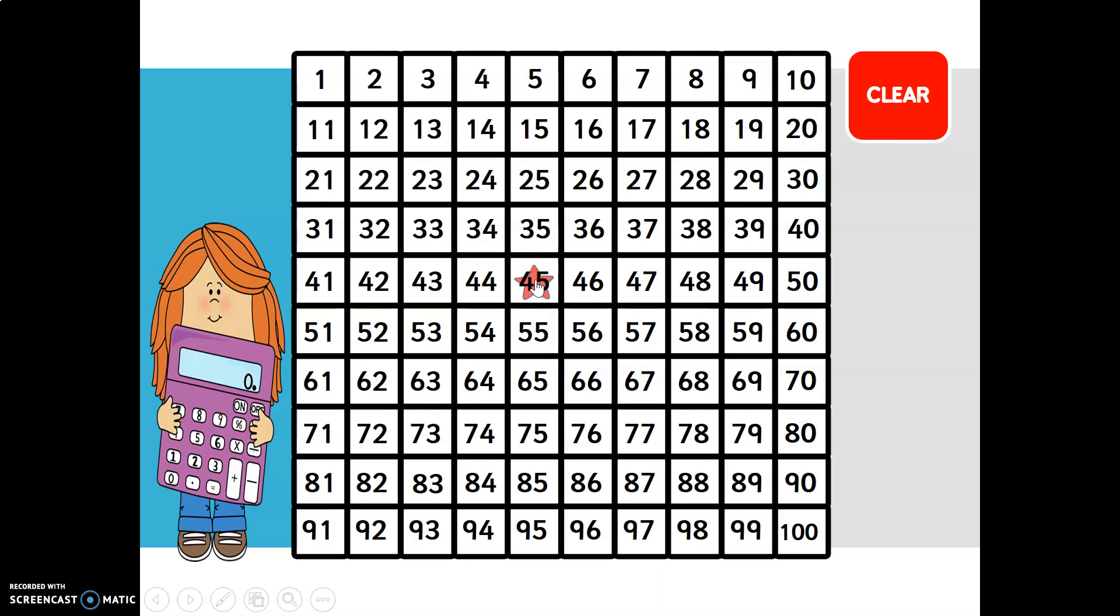What if I move up a row to 35? From 45, I'm subtracting 10 units. Let's look: 1, 2, 3, 4, 5, 6, 7, 8, 9, 10.